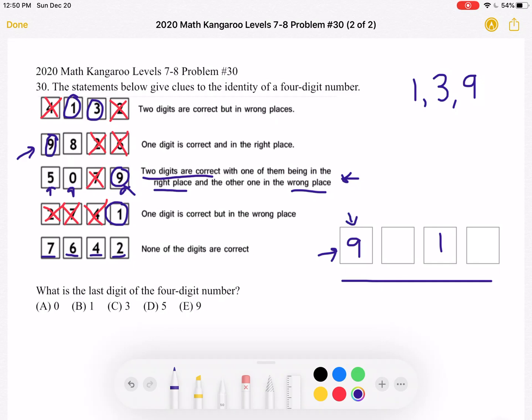So 0 must be over here, and that leaves us with placing the 3. And the 3 must then go into the last spot.